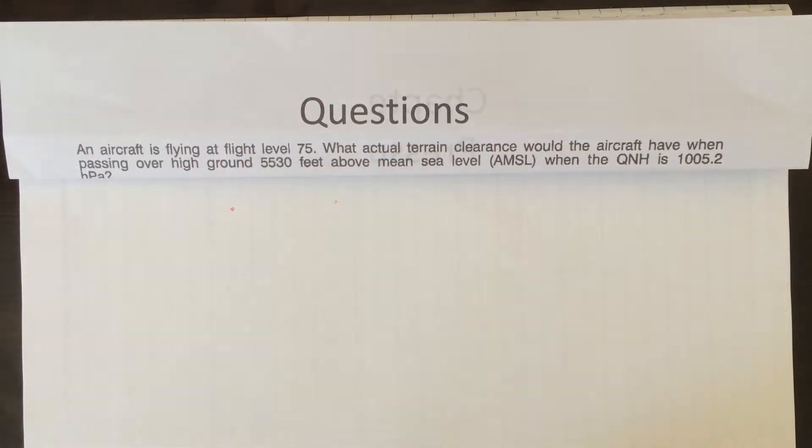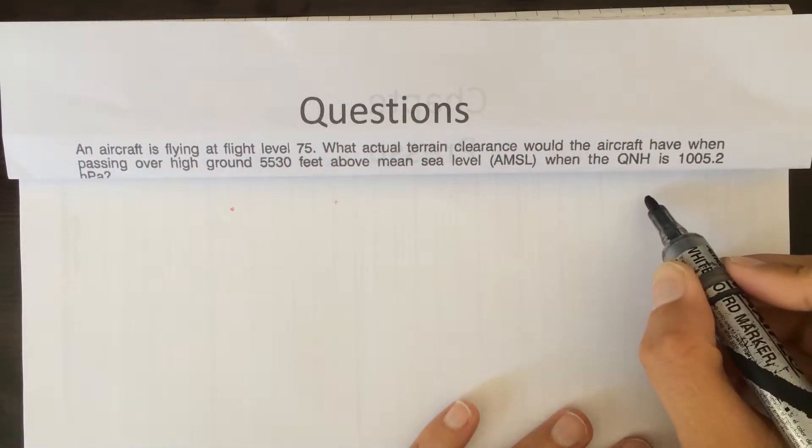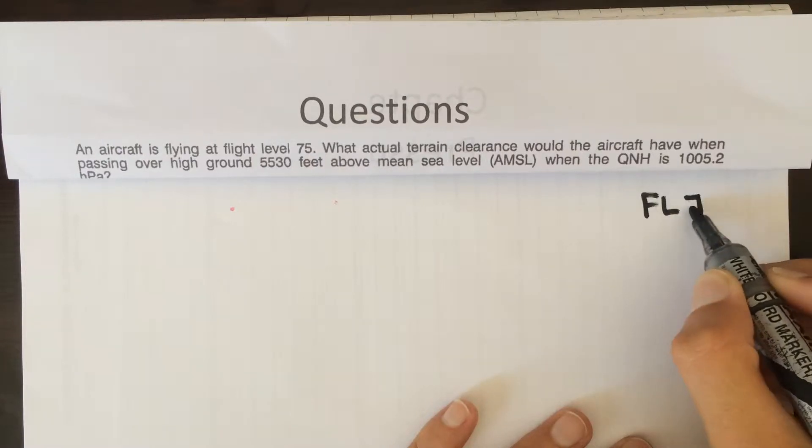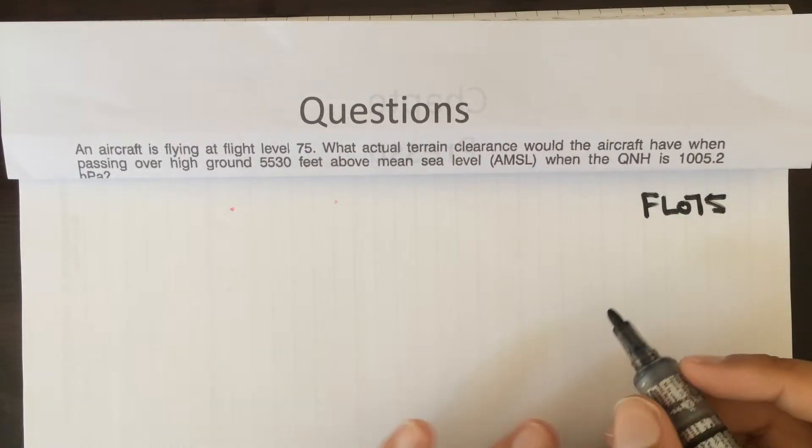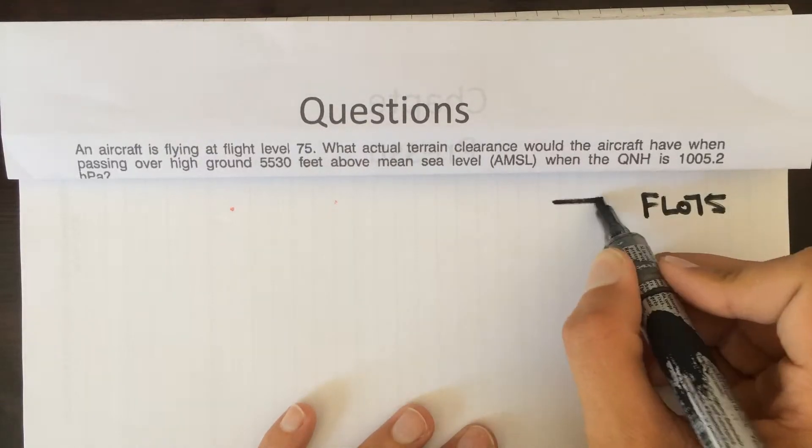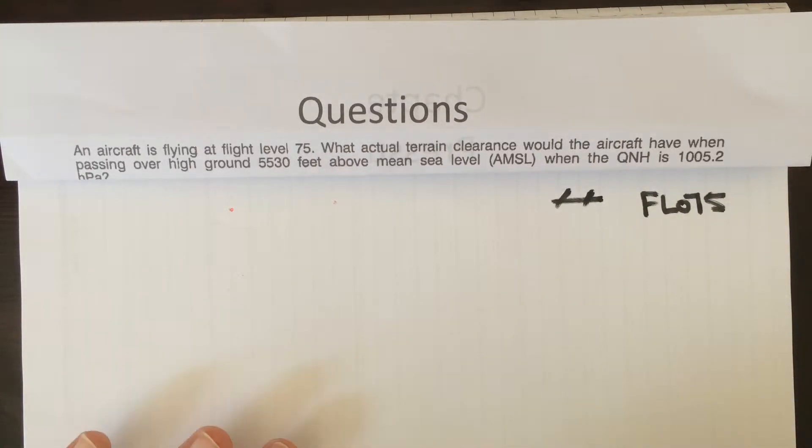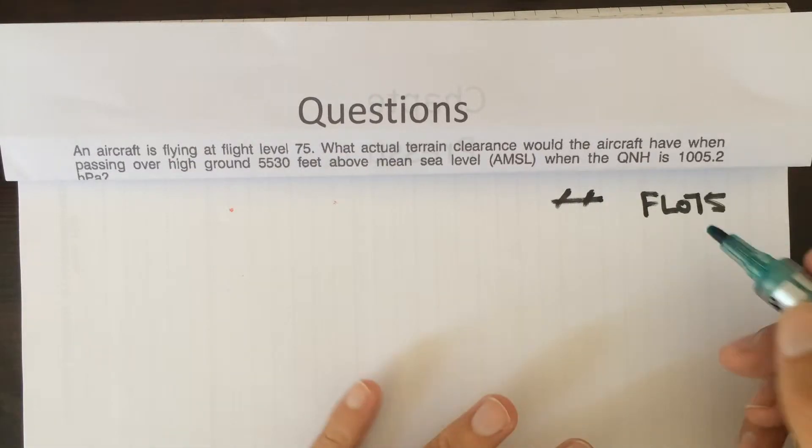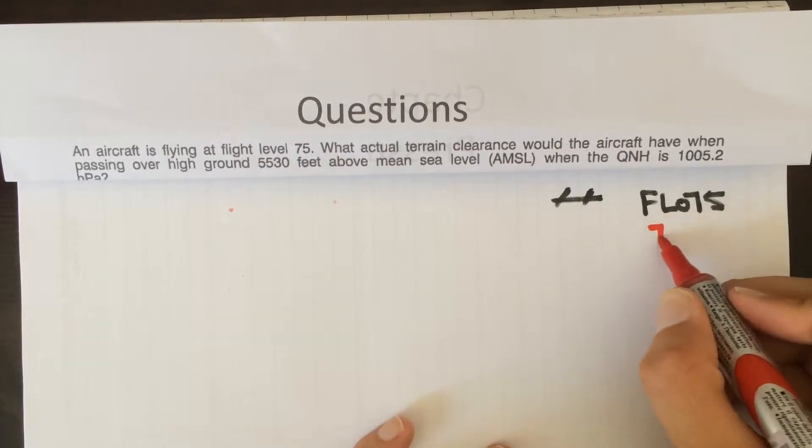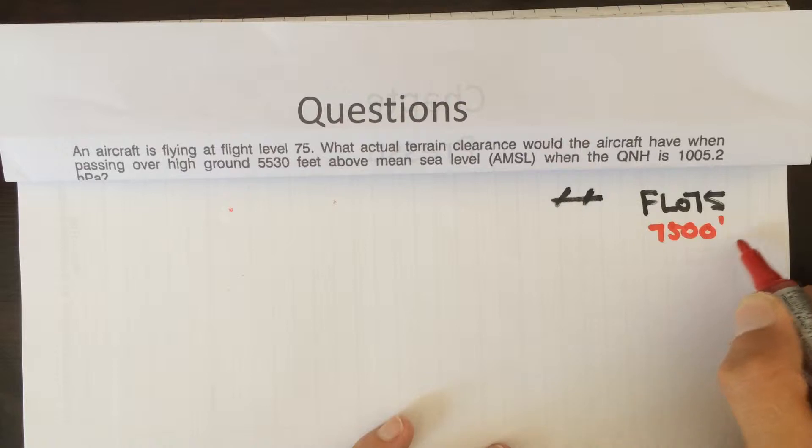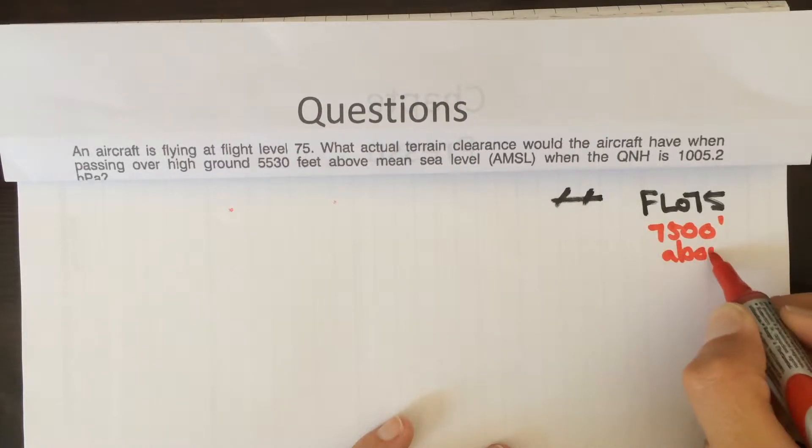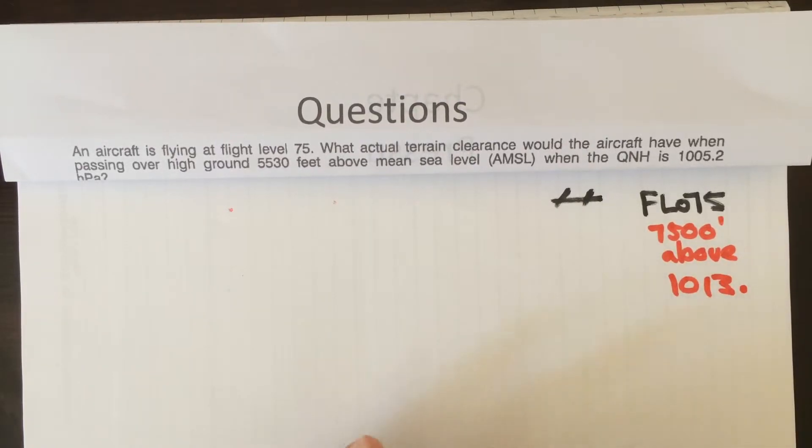So I'm just going to put it up a little bit here. The question says an aircraft is flying at flight level seven five - flight level 075, let's put a zero there to make it more correct. Let's just draw a little aircraft over here flying at flight level seven five. That's a little airplane if you're trying to figure out what I just drew. We know aircraft at flight level seven five, which in essence means that the aircraft is seven thousand five hundred feet above one zero one three.